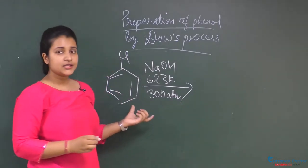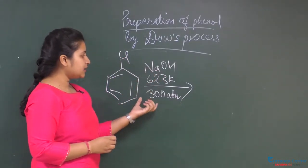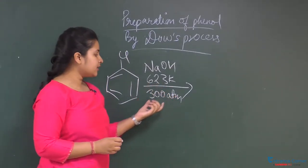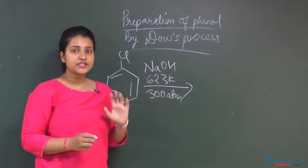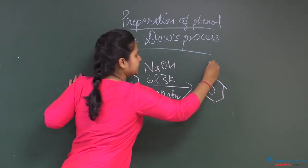What we do is we hydrolyze this chlorobenzene in alkaline medium at 623 Kelvin and 3 atm pressure, which yields us phenol.